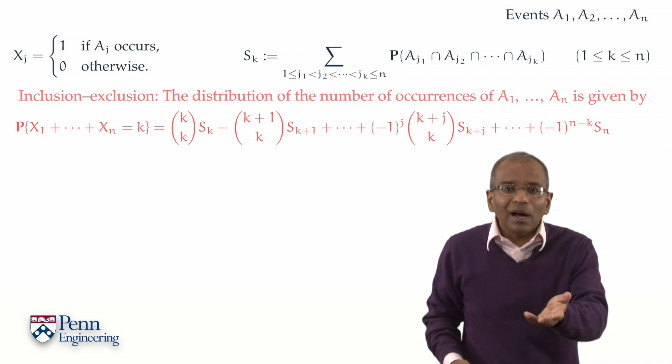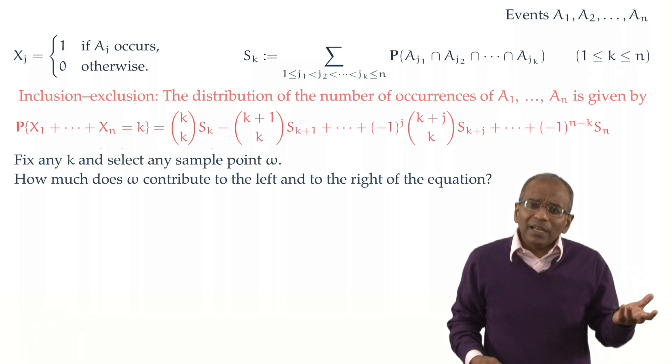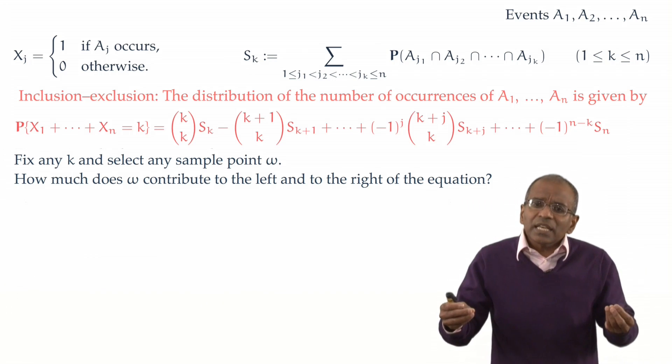The tack of the magician: take a card, any card, in our context. Fix any value k, and pick any sample point. Say, little omega.